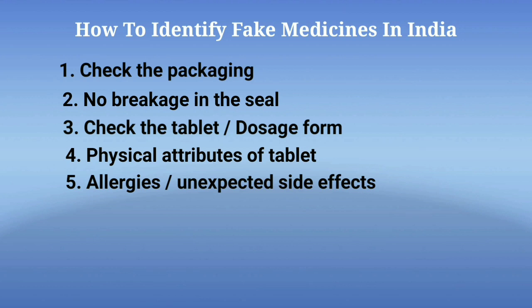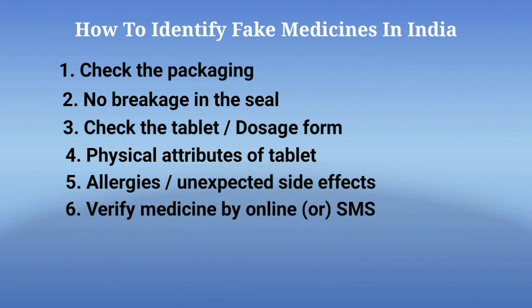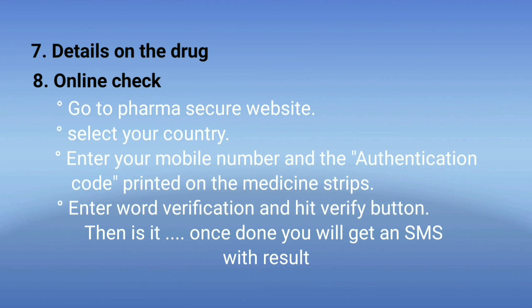The fifth point is allergies or unexpected side effects. Most medicines have mild side effects, so it is important to consult your doctor before usage to keep check of any allergies. If you notice certain unexpected or harmful side effects from your medicine, report to your doctor immediately. You can also verify medicine by online or SMS — a unique identification code along with a barcode is printed on the medicine package or strip. Match whether the expiry date, batch number, and address of the manufacturer on the secondary package are the same as on the primary package. You can also check the medication batch number online by visiting the Pharma Secure website, selecting your country, entering your mobile number and the authentication code printed on the medicine strip, then entering word verification and hitting the verify button. You will then receive an SMS with the result.